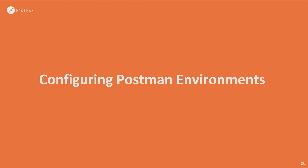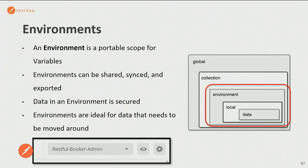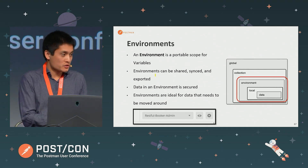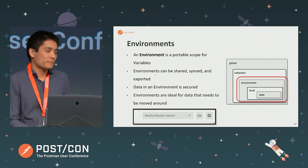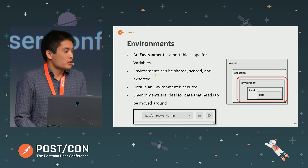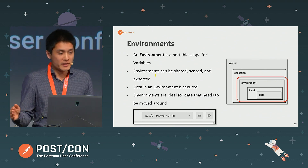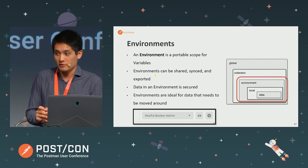Where do we define those values for our variables? One possible place is by using an environment. An environment is like a portable scope for our variables — you can define the environment and use it across different requests. Environments can be shared between different workspaces and will be synchronized. You can also export and import environments. The data stored in an environment is secured, so things like passwords and API keys you can store there, although there is a caveat I'll explain when talking about how you configure values.